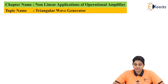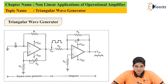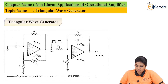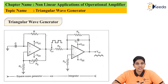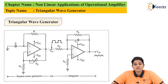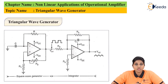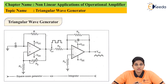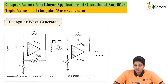In this video we are going to see one of the applications of operational amplifier, that is nothing but the triangular wave generator. The circuit of a triangular wave generator basically consists of two circuits: the square wave generator and the integrator. The square wave generator produces a square wave at the output, and the integrator produces a triangular wave when a square wave is applied as input. When these two circuits are combined together, we get a triangular wave at the output.